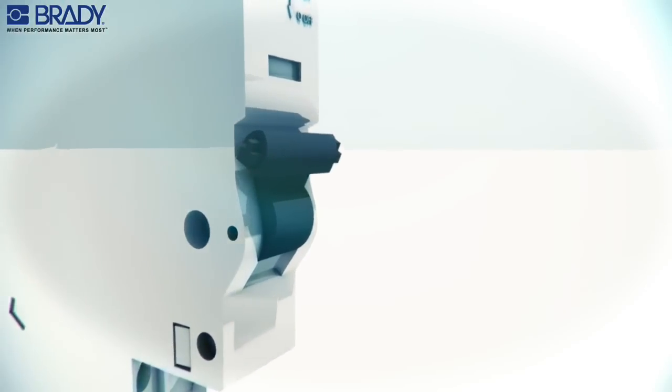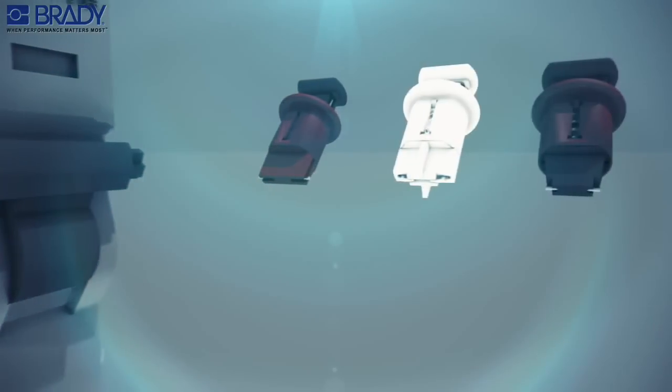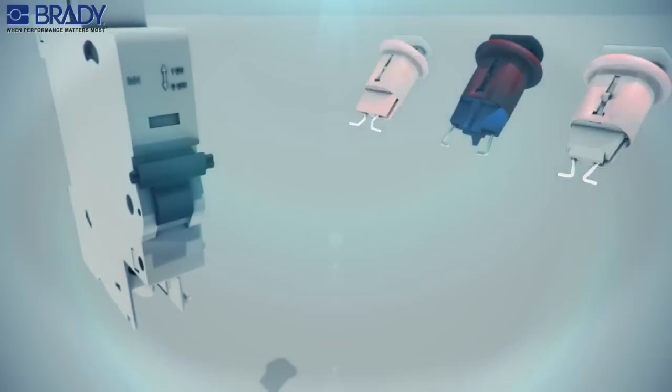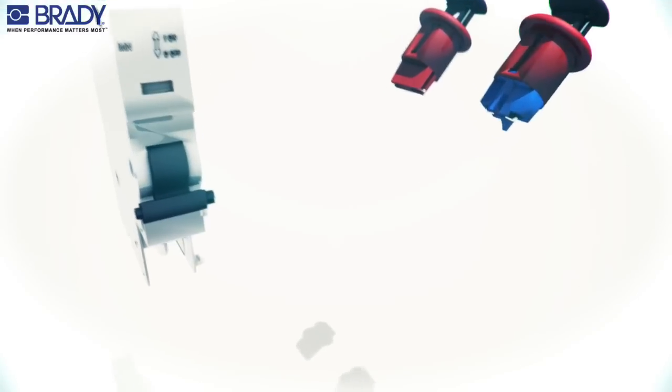Locate the small holes in the center of the circuit breaker casing. Select the appropriate pin in or pin out circuit breaker device. Place the circuit breaker in the off position.